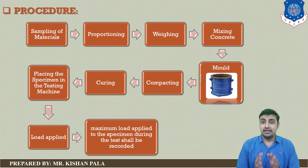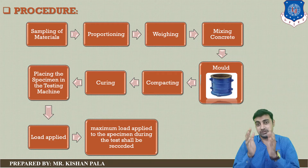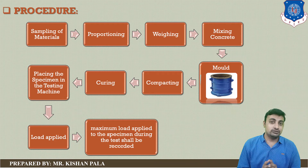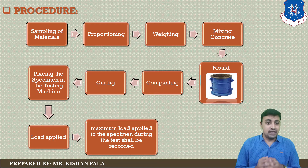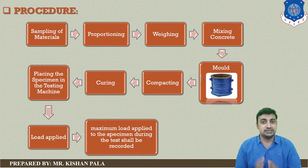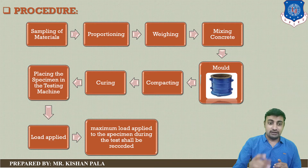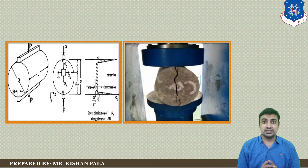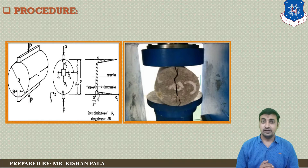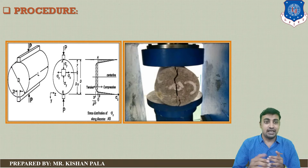Your concrete specimen is ready for water curing. Put the specimen in the curing tank for the hardening process. After 7 days or 28 days, take it out and place it in the compression machine to carry out the test procedure. You have to put the specimen in the horizontal direction, as we will discuss with this picture.